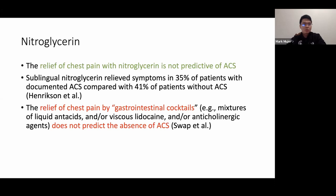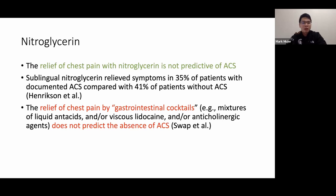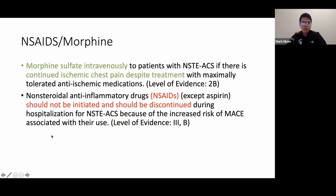Although nitroglycerin relief is used as a diagnostic criterion, studies show it is not predictive of ACS. Henriksen et al. found that 41% of patients without ACS had symptom relief with sublingual nitroglycerin, compared to only 35% of patients who actually had ACS. This may reflect a placebo effect or concomitant esophageal spasm. Conversely, relief with a GI cocktail does not predict the absence of ACS.